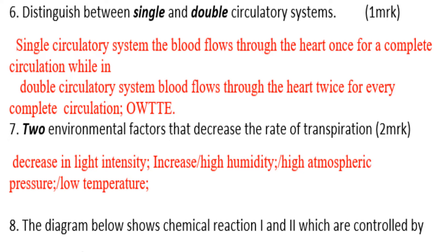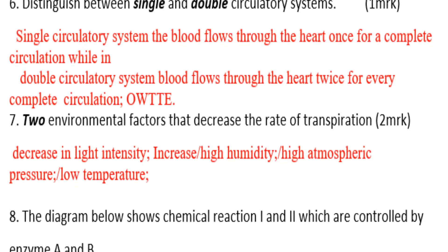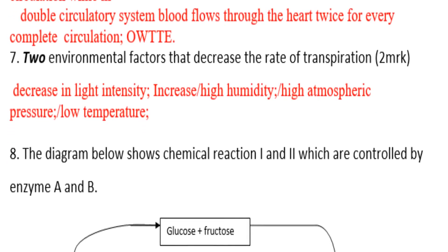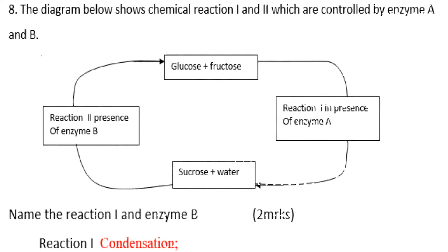Next, you are told the diagram below shows a chemical reaction. That diagram is shown here and we are going to see it clearly. The diagram shows reactions one and two, which are controlled by enzyme A and enzyme B.